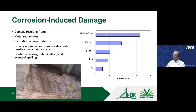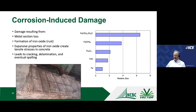Does cathodic protection work for already-corroded bar? Yes. Will it recover cross-sectional loss? No. If you have a structurally deficient structure with broken stirrups, you need to add additional structural capacity first, and then install the cathodic protection system after the structure is sound.